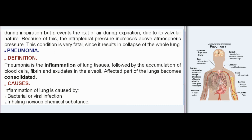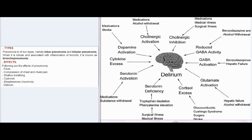Pneumonia is the inflammation of lung tissues, followed by accumulation of blood cells, fibrin, and exudates in the alveoli; the affected part becomes consolidated. Inflammation is caused by bacterial or viral infection or inhaling noxious chemical substances. Pneumonia is of two types: lobar pneumonia and lobular pneumonia. When lobular and associated with inflammation of bronchi, it is called bronchopneumonia. Effects include fever, compression of chest and chest pain, shallow breathing, cyanosis, sleeplessness (insomnia), and delirium.